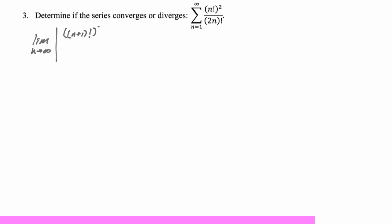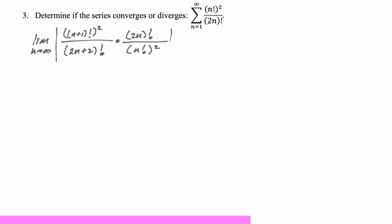For the n+1 term, we have the quantity (n+1)! whole squared — be really careful writing that — over (2(n+1))! which is (2n+2)!. There are a lot of places to make mistakes, so just be careful. (n+1)! squared expands to (n+1)² times (n!)². We take an (n+1) out of each of the (n+1) factorials, and since we're squaring, we get (n+1)² times (n!)².